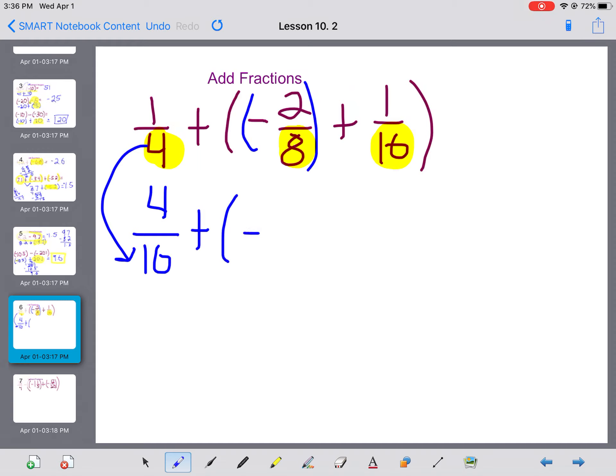So I have 4 16ths plus negative, let's see, also 4 16ths, some brackets around there, plus 1 16th. Now, because we're following BEDMAS, I do what's in the brackets first. So negative 4 16ths plus 1 16th, I could do some good old subtraction.